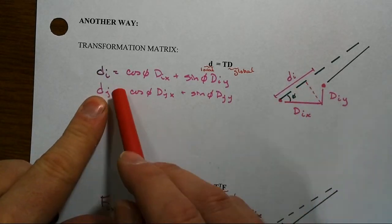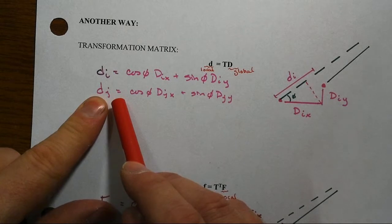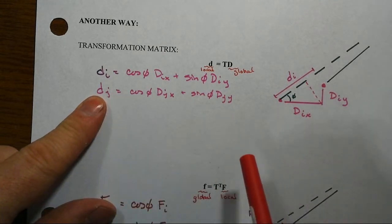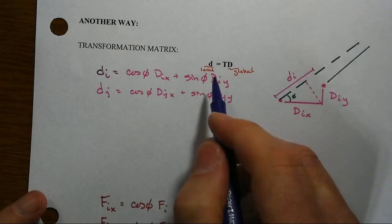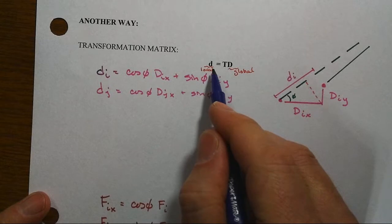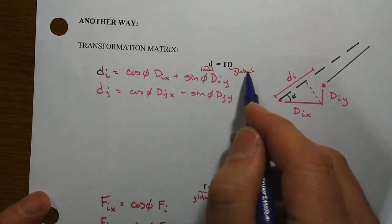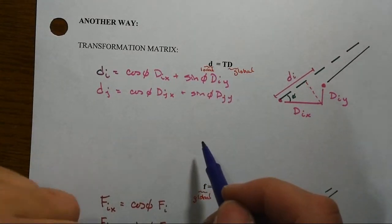Do the same thing over here at the far end at j and what we're going to end up with is the opportunity to write the following matrix kind of expression. Notice that we'll have the local stuff on the left hand side and we'll have the global stuff over here on the right hand side.